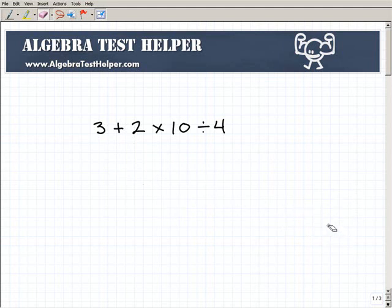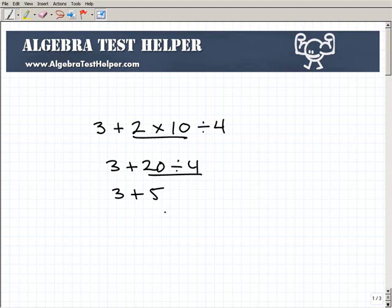What we're supposed to do, hopefully what you did, was you did this. Instead of 3 plus 2 is 5, you said, this is going to be 3 plus 2 times 10, which is 20 divided by 4. Then you said, this is 3 plus 20 divided by 4 is 5. So your final answer is 8.